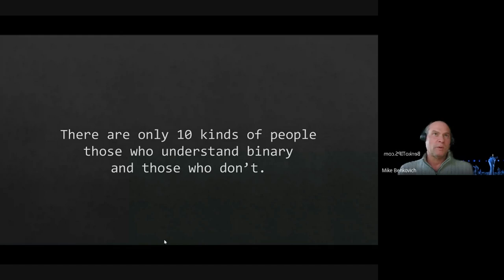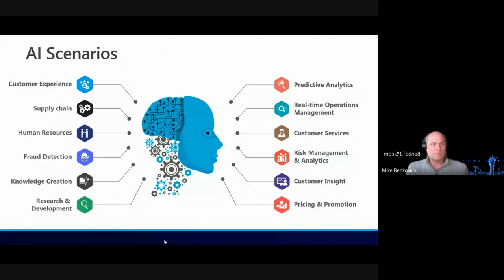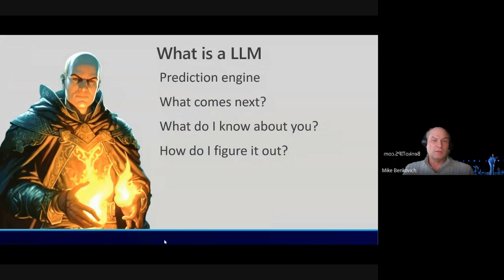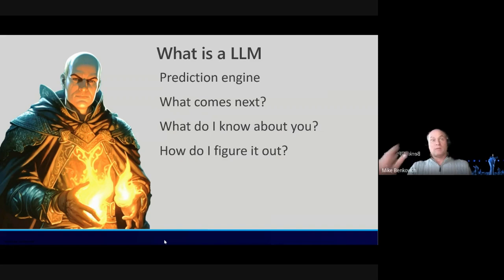There are a lot of scenarios where AI comes in — customer experience, risk management, predictive analysis. But it's really understanding what a large language model is and what it's really doing. From a very high level, it's a prediction engine. When it takes input, it generates output — it tries to figure out what comes next. And if we give it context, more information about how we're asking, it can get better and better at answering our questions.